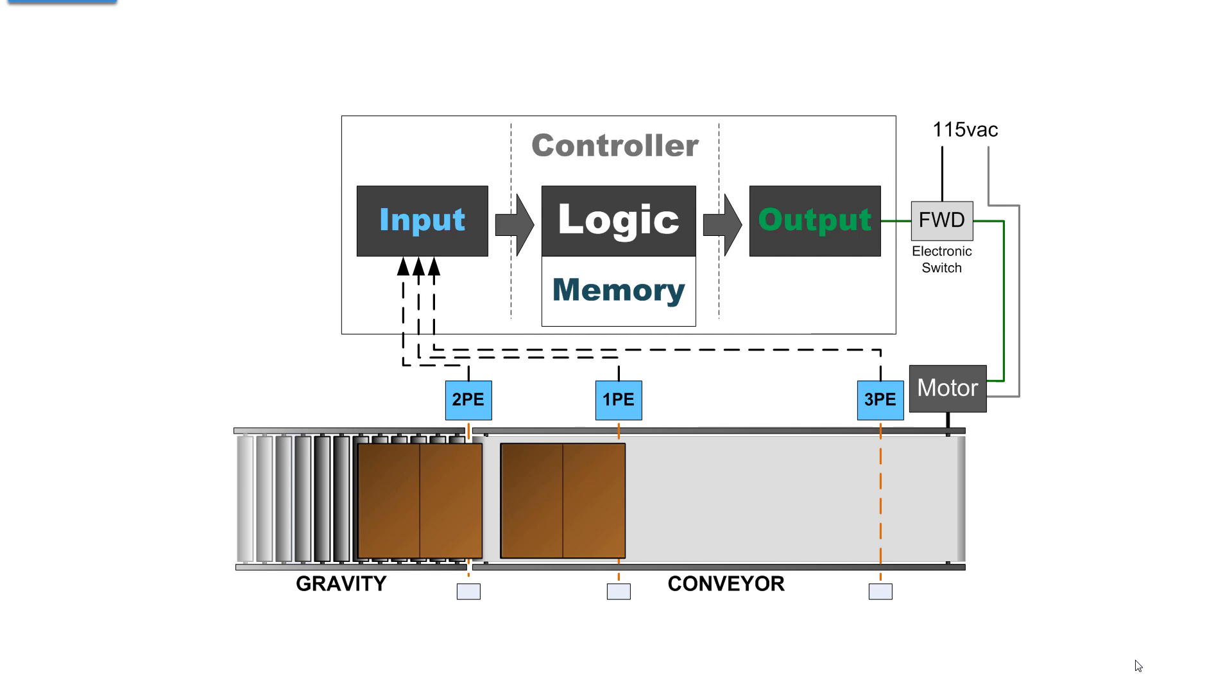Now you have a carton blocking 1PE and 2PE. Then the controller can decide further what to do next, because it knows that there is a carton at 2PE, a carton at 1PE, and nothing at 3PE.